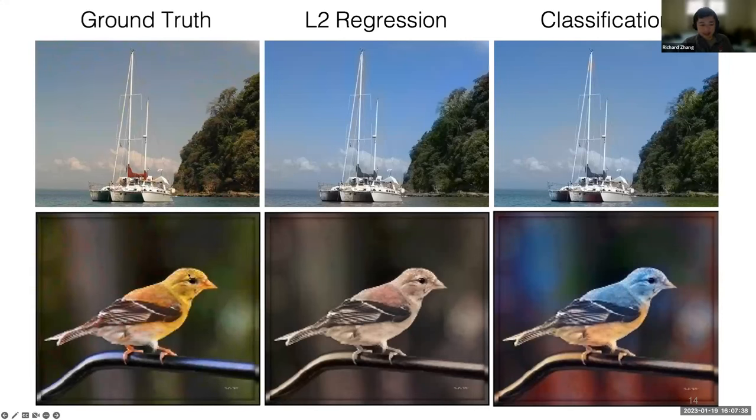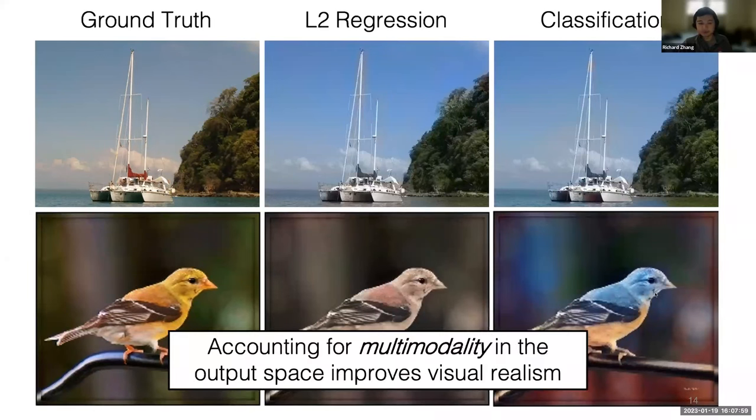If we compare to the ground truth, the ground truth bird is actually yellow, which is not anything close to this blue bird. But because the blue bird is kind of vibrant and more realistic than this dull sepia bird, we're perhaps happy, even though from an L2 sense, the ground truth and our prediction is actually very different. What we've seen here is that losses that account for multimodality in the output space really improve visual realism.